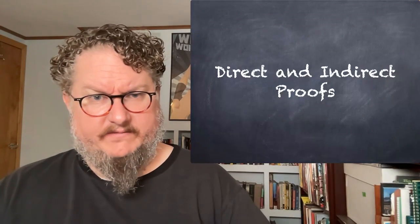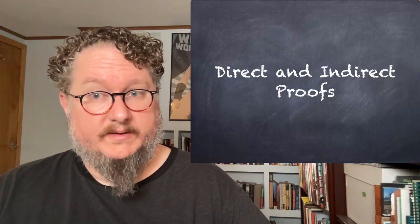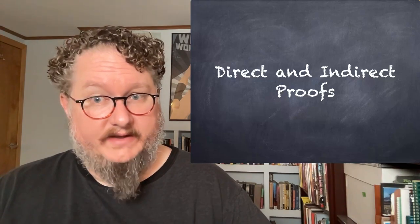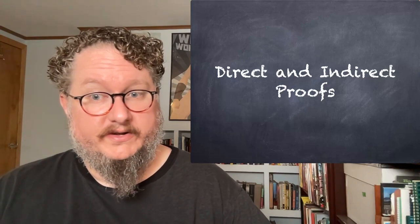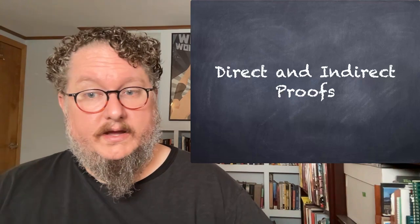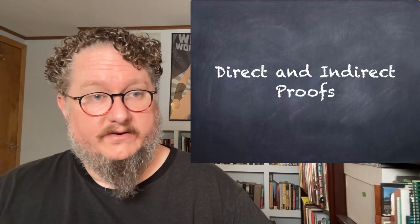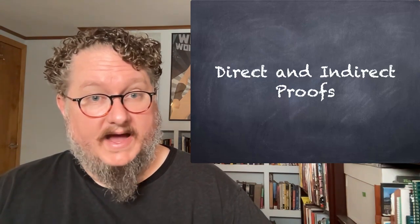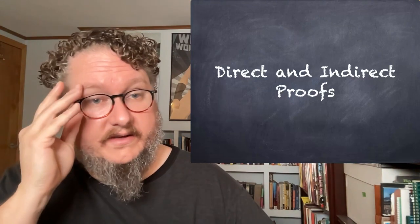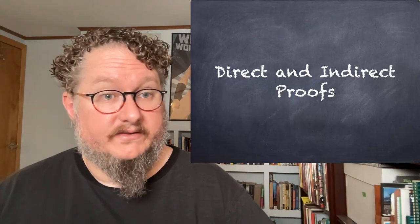Before we wrap up, let me talk about the language of direct and indirect proofs. Direct proofs — which is what we've seen so far — derive their conclusions from the starting premises using rules of introduction and elimination. The only things in a direct proof are the starting premises, intermediate steps derived from those premises, and the conclusion. Indirect proofs, which we'll cover in the next lecture, introduce additional assumptions in the course of the proof. Until then, I suggest you look over the first part of Chapter 6 in For All X. Let me know if you have any questions. Bye.